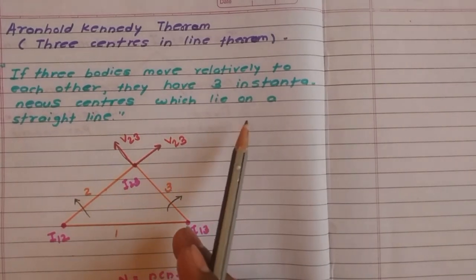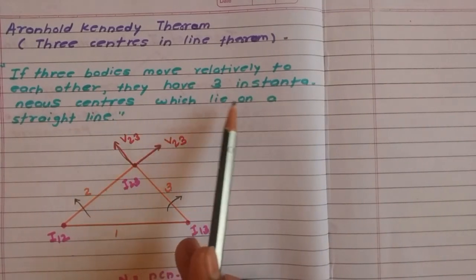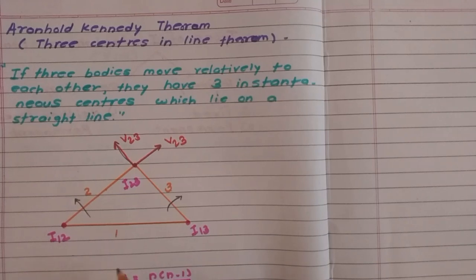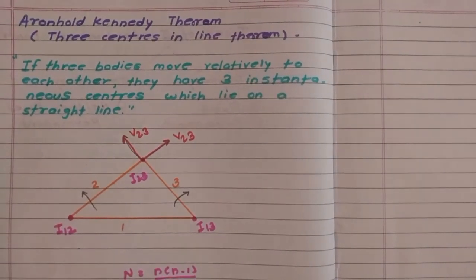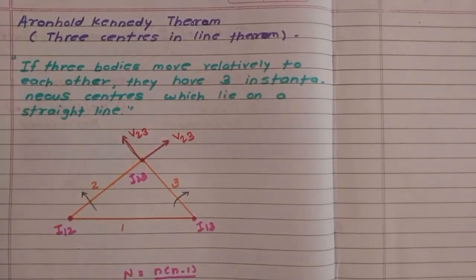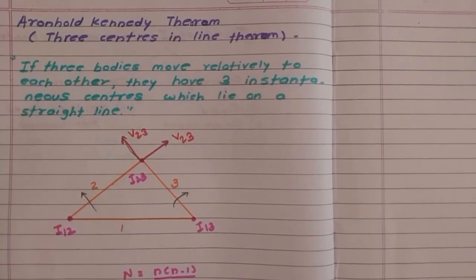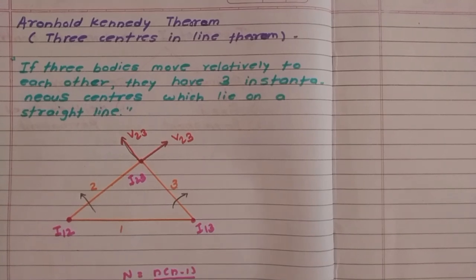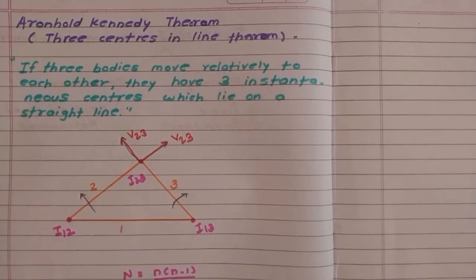That's why it is stated that all three instantaneous centers should lie on a straight line. This is how Arnold Kennedy's theorem is proved. Whenever there are three bodies having relative motion with each other, there are three instantaneous centers which must lie on a straight line.